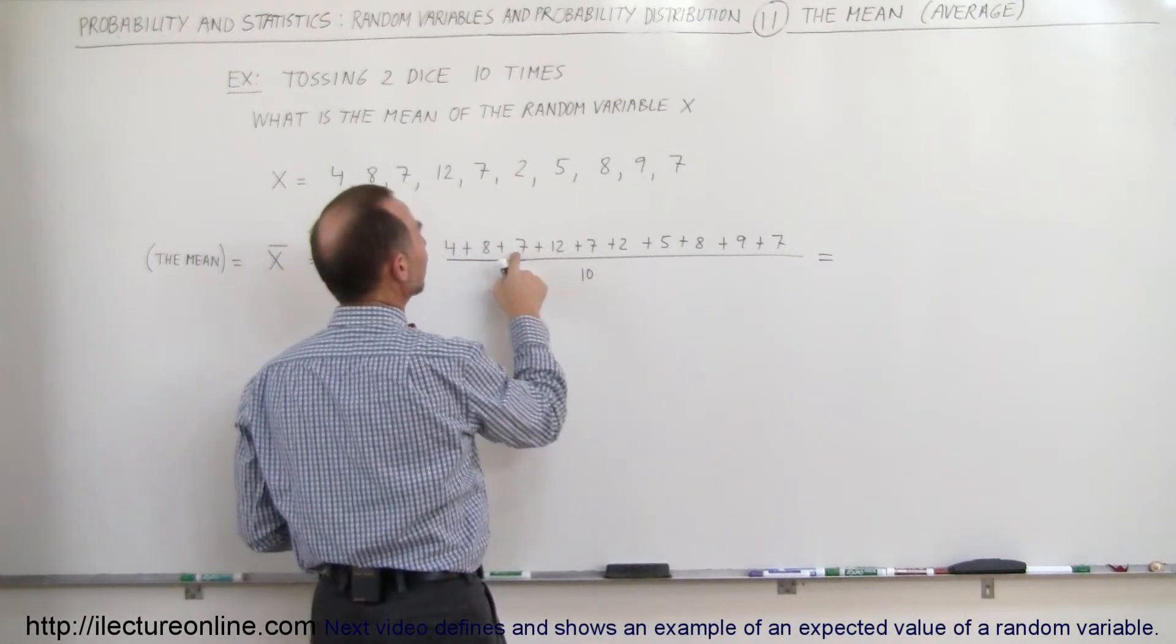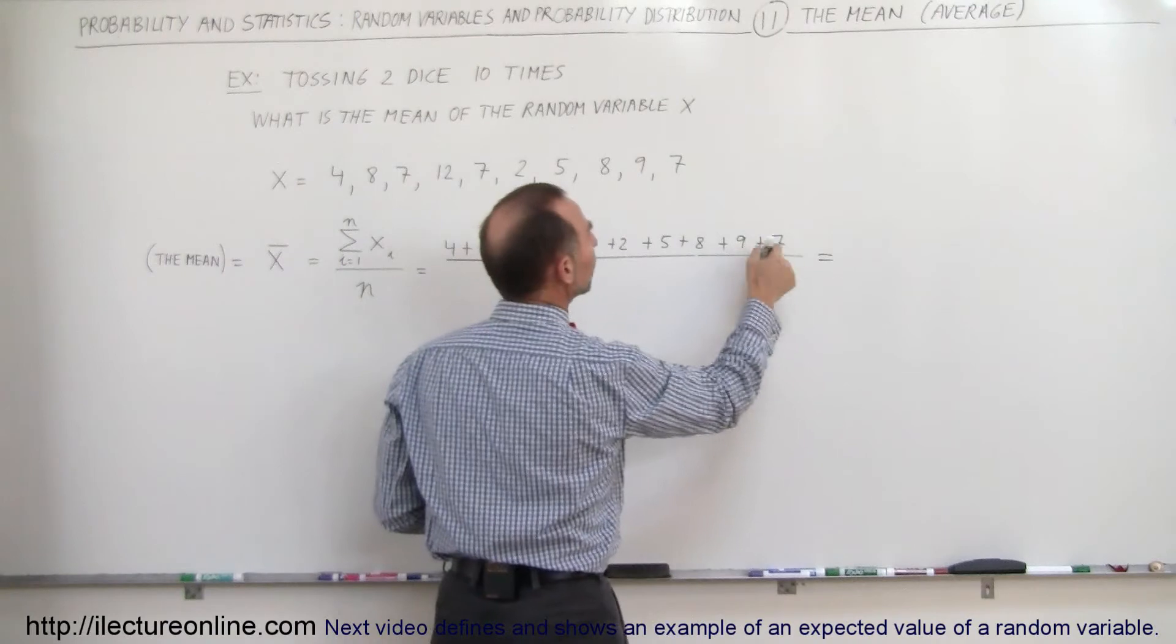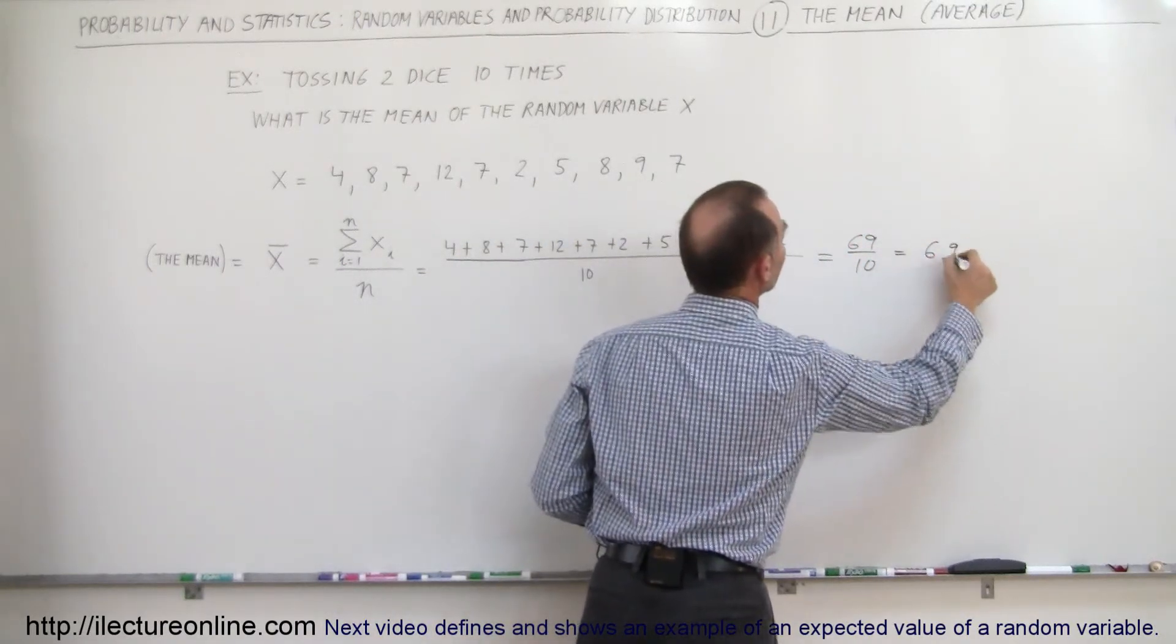So you get, that's 12, 19, 31, 38, 40, 45, that's 53, 62, 69, divided by ten, and so the average would be 6.9.